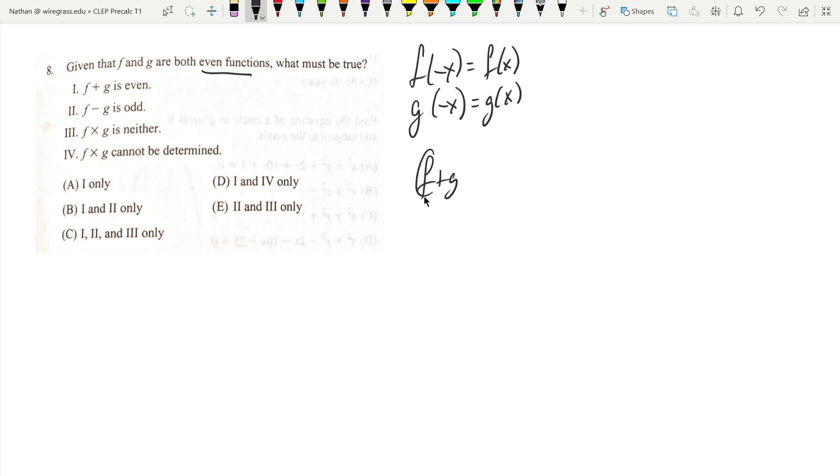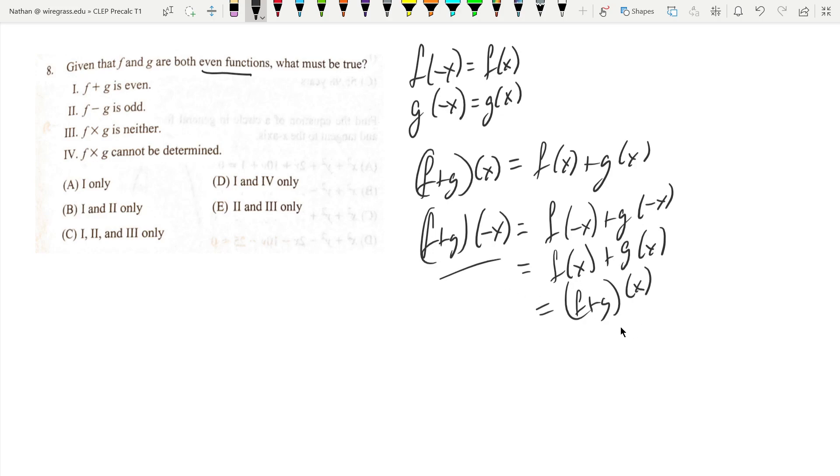Well, f plus g of x is the same thing as f of x plus g of x. So f plus g of negative x equals f of negative x plus g of negative x, but that's just f of x and g of x because they're even functions. That's the same thing as f plus g of x, and this is the definition of an even function, so statement 1 is true.